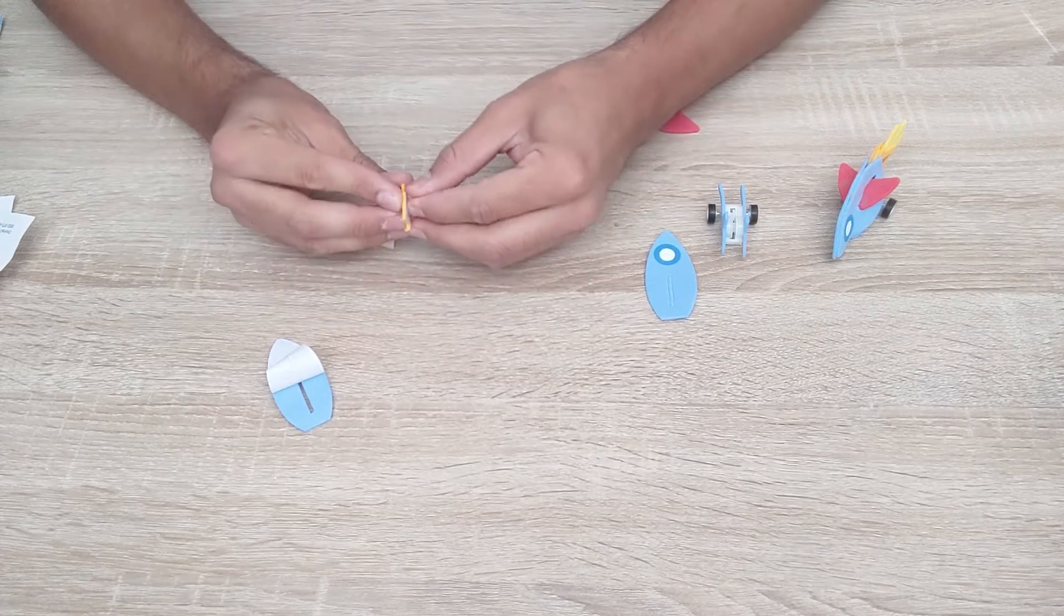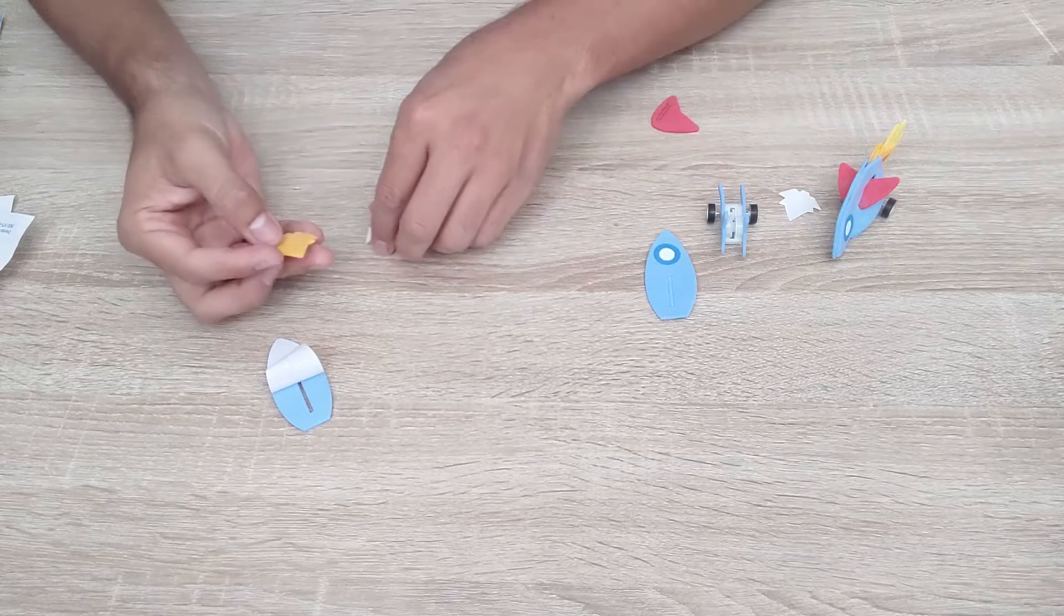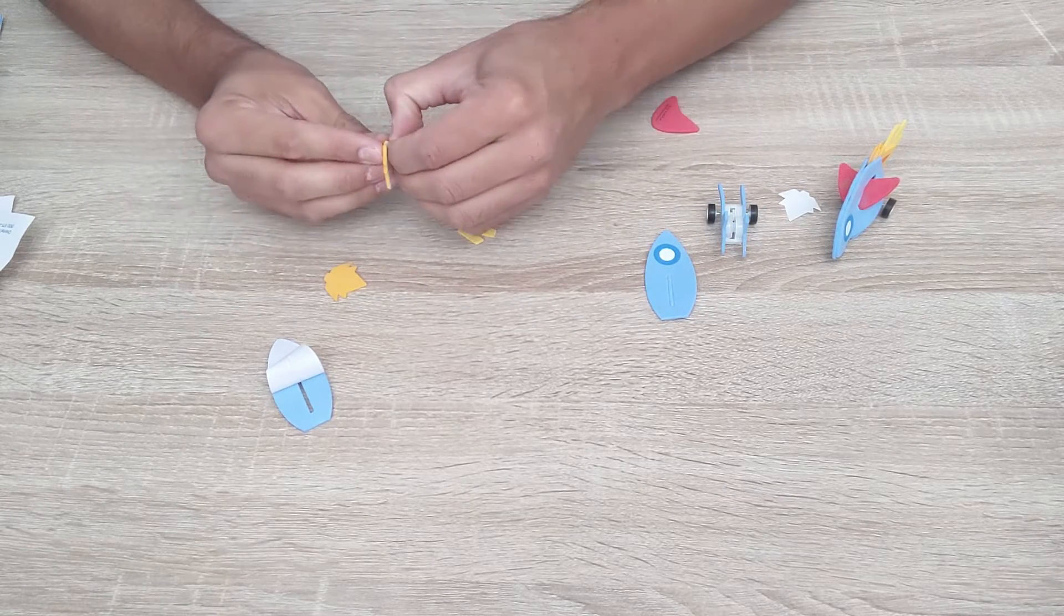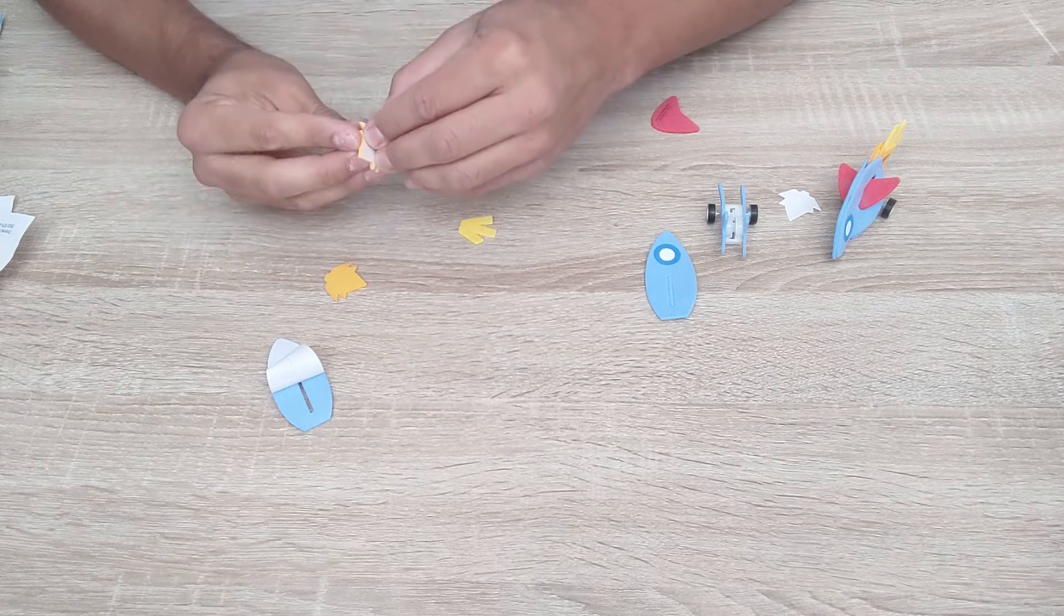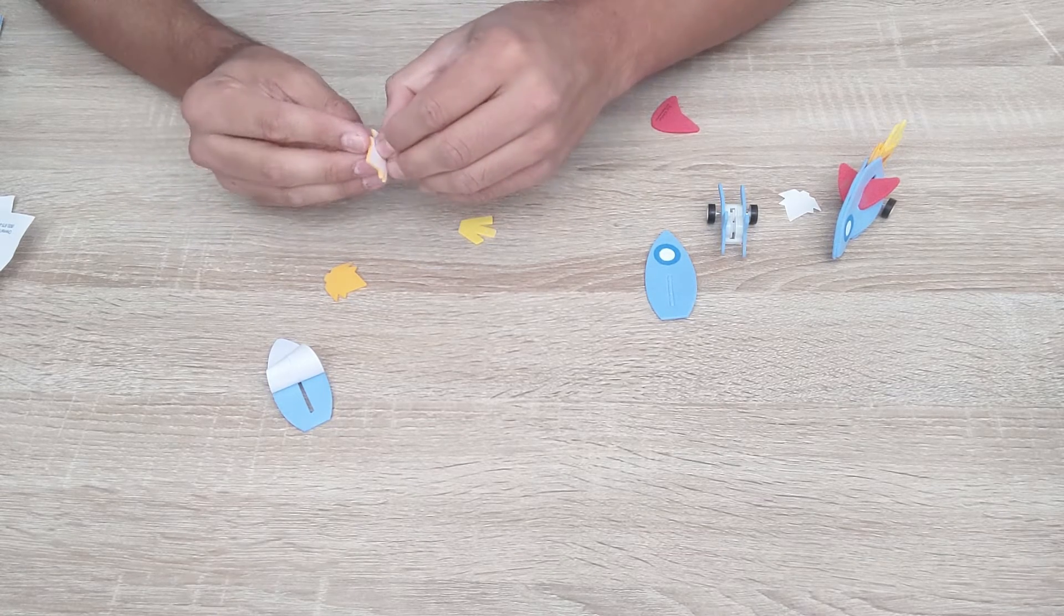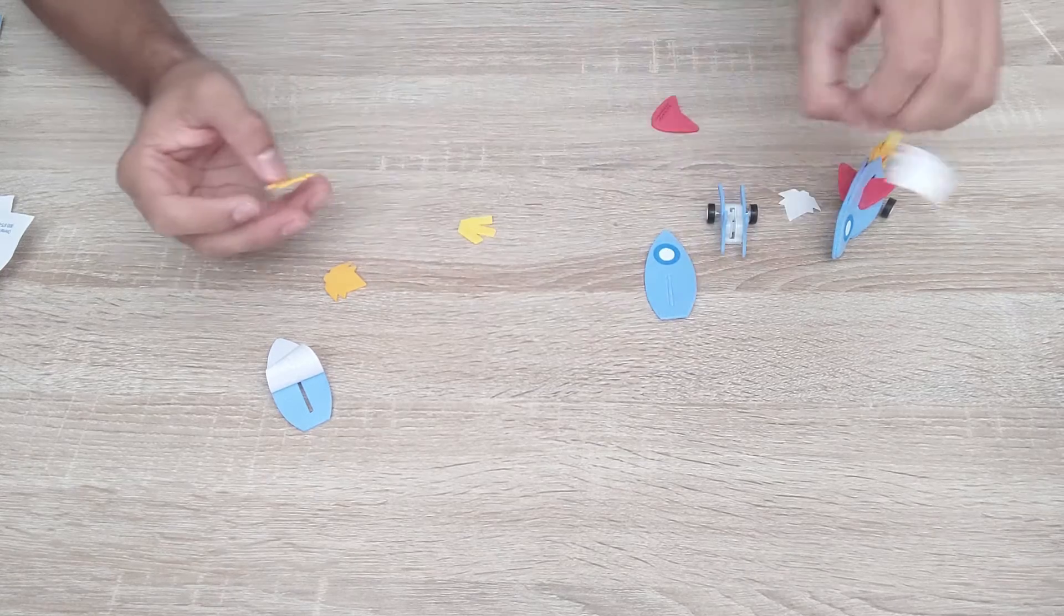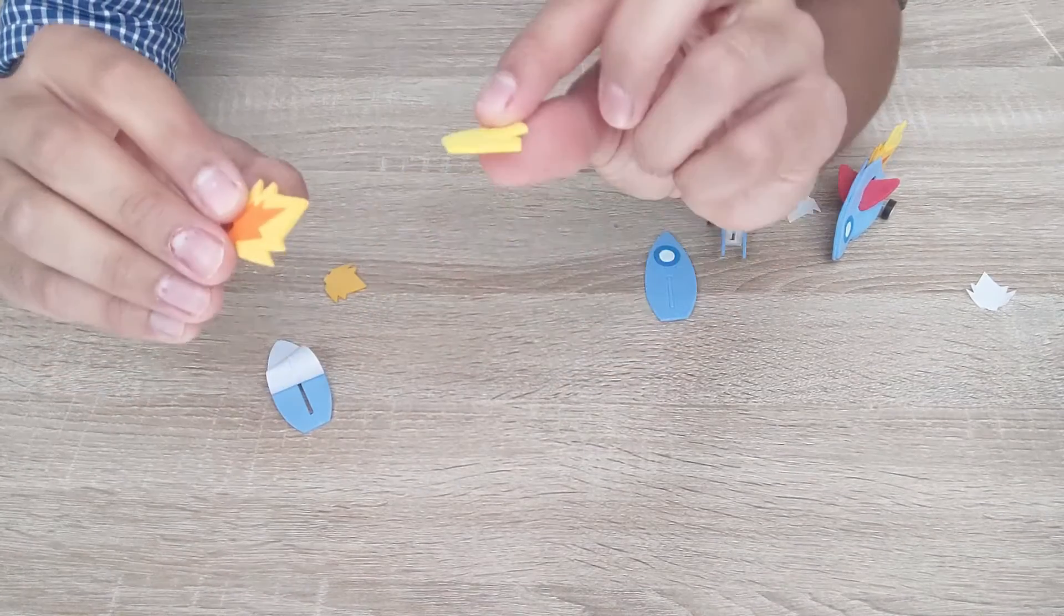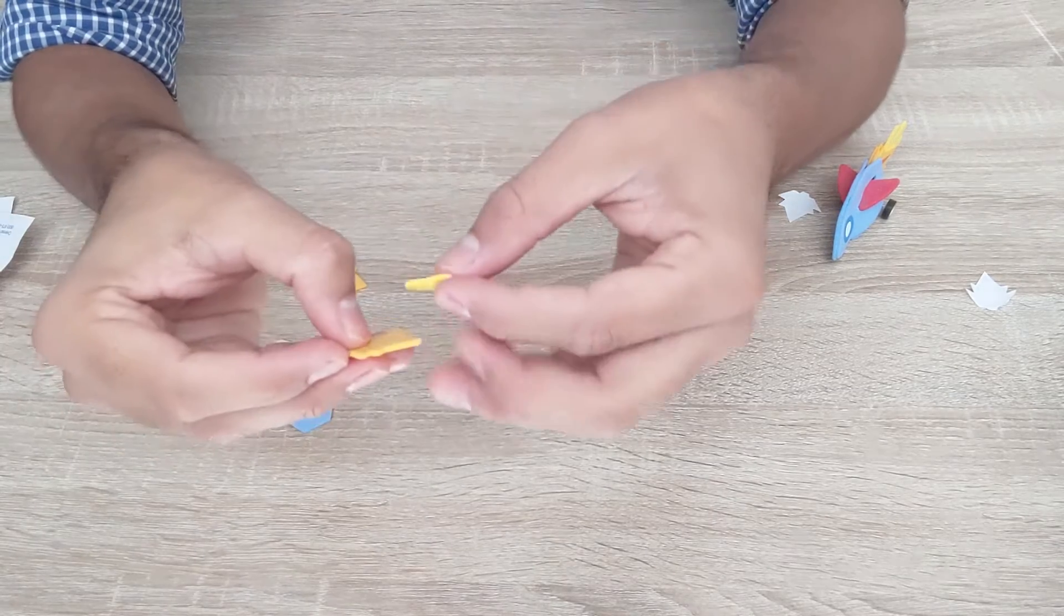So you're going to peel off both of the orange flames. And again, it's sticky on the back, so you're going to want to be careful and make sure it doesn't stick to each other. It's not impossible to separate, but it is tricky.